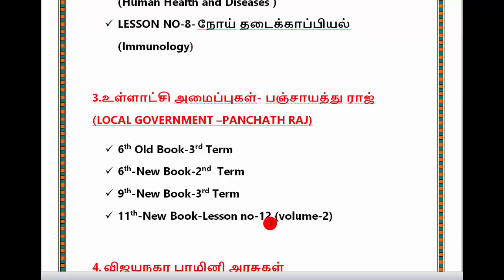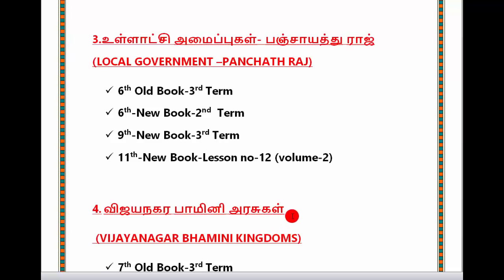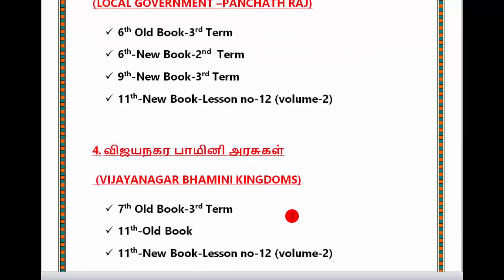Lesson Number 8, Lesson Number 2, that's Volume 2. You can learn this lesson — you can read through it and learn more. Click the link provided. The next topic is Vijayanagara Bavaniya Arasakal — the Vijayanagar Empire. This is from the 7th World Book, 3rd Term Book, and also the 7th New Book, Lesson Number 12.